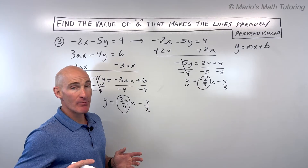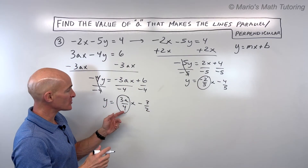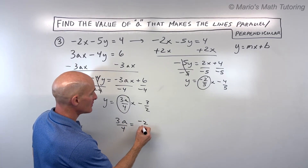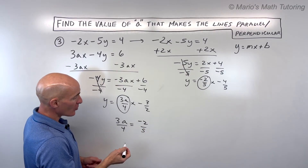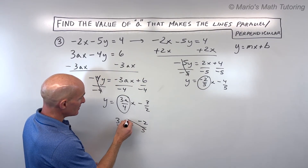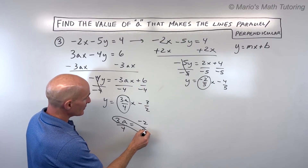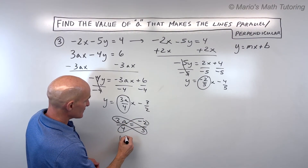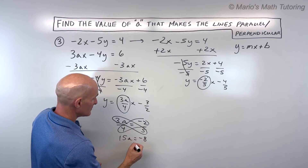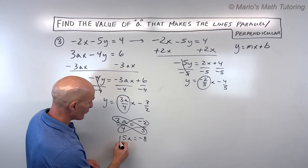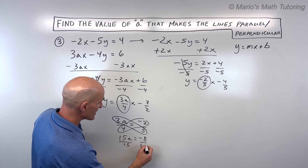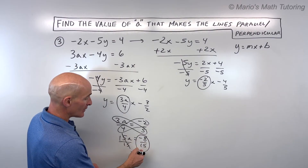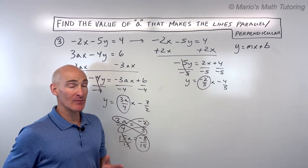For parallel lines, the slopes must be equal, so we set 3a/4 = −2/5. Using cross-multiplication: 3a × 5 = 15a and 4 × (−2) = −8, giving 15a = −8. Dividing both sides by 15, we get a = −8/15. That's the value of a that makes the lines parallel.